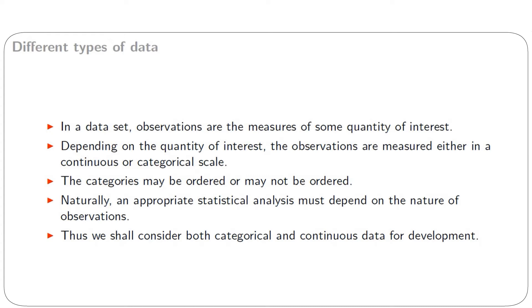We shall discuss different types of data in statistics. In a data set, observations are the measures of some quantity of interest. Depending on the quantity of interest, the observations are measured either in a continuous or categorical scale. The categories may be ordered or may not be ordered. An appropriate statistical analysis must depend on the nature of the observations. We shall consider both categorical and continuous data for development.